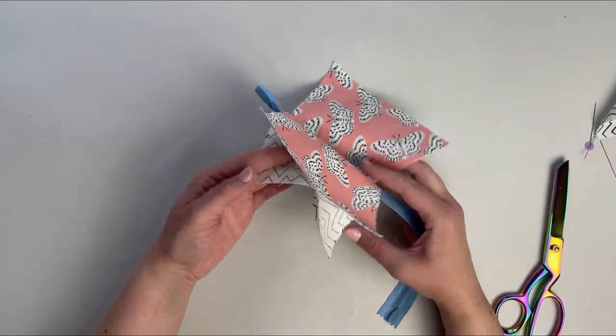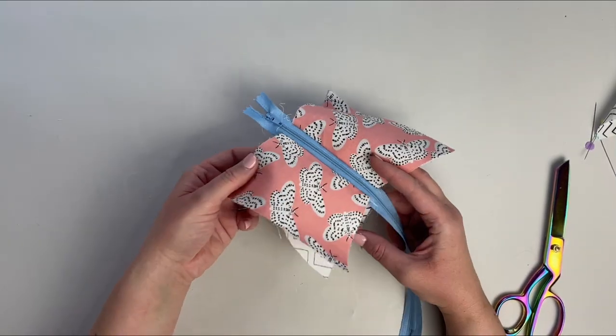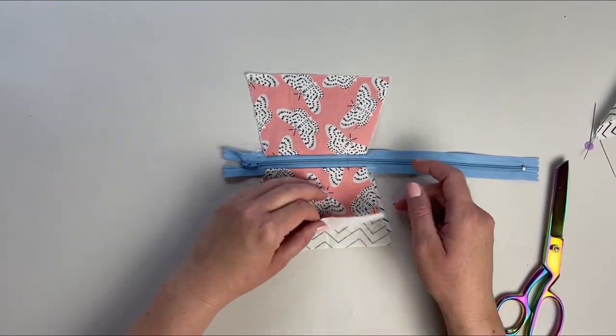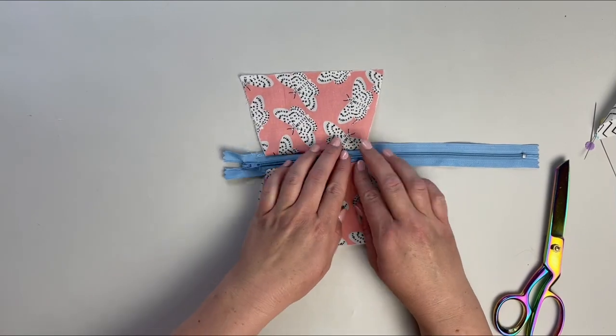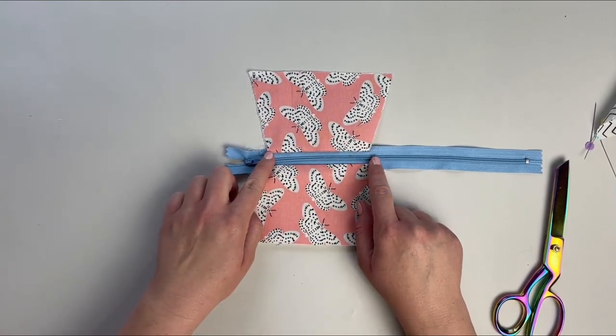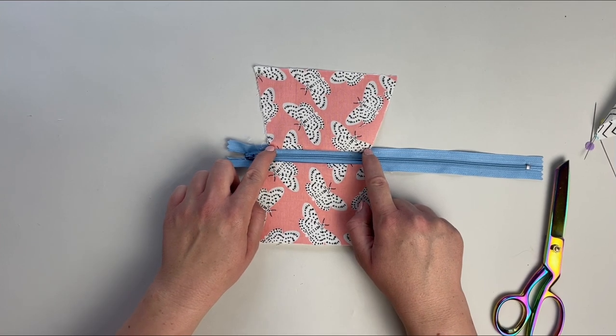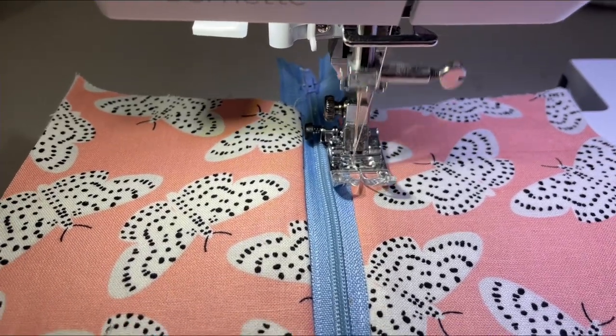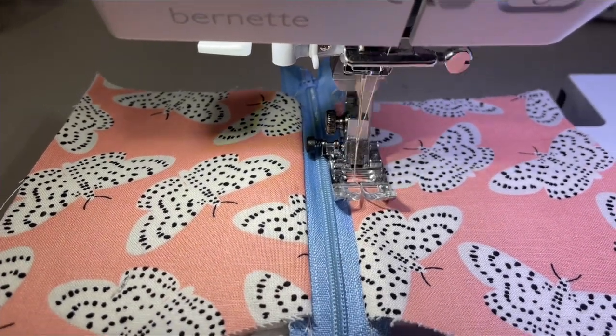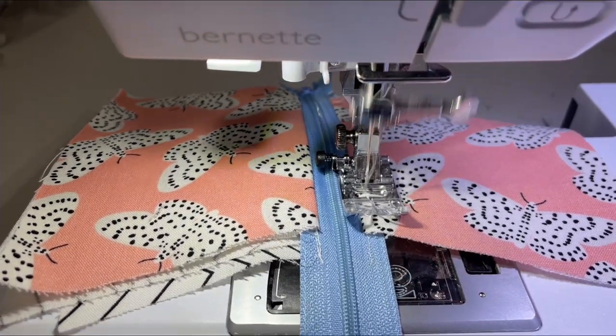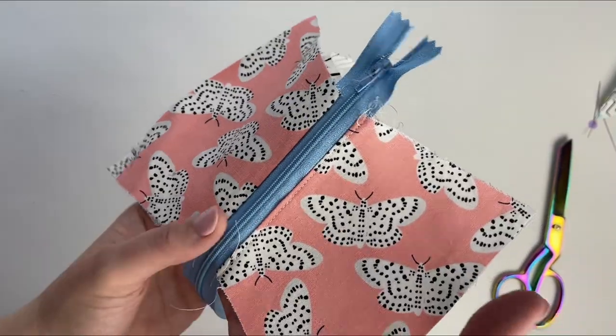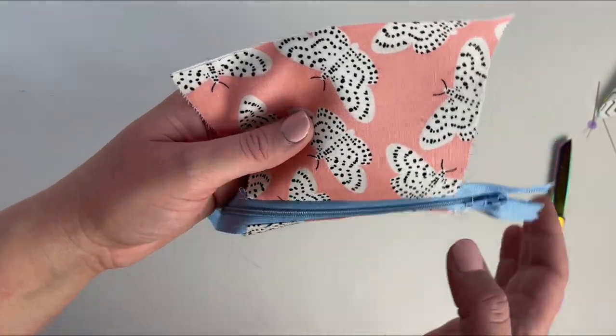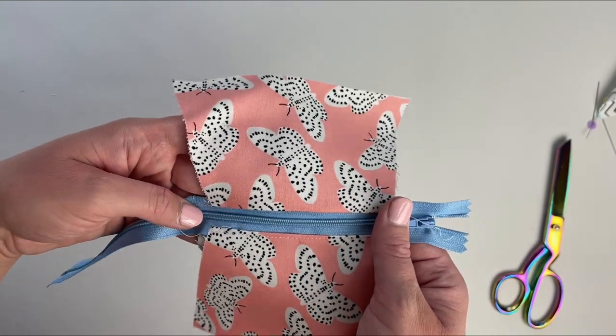Okay, so now we have the lining and the main fabric both attached to the zipper. The next step is to separate the main fabric, one piece of main fabric from all the other layers and press it. Then we're going to top stitch along this line to make it look a little bit nicer, and that way the zipper teeth won't get caught up in the fabric too. After you've done that top stitching, repeat the same method with the other side of the main fabric.